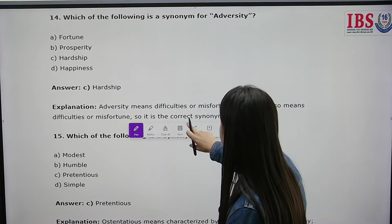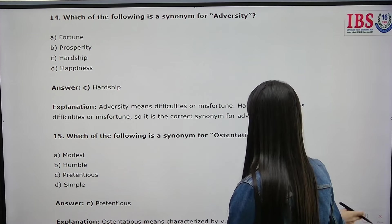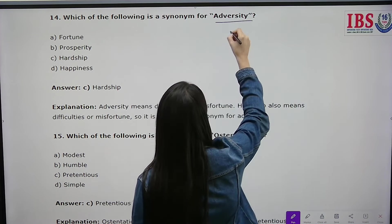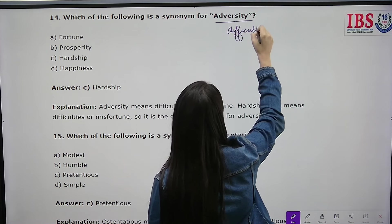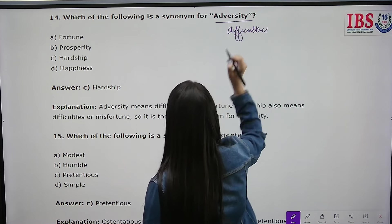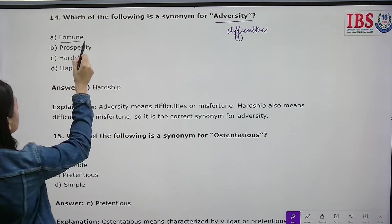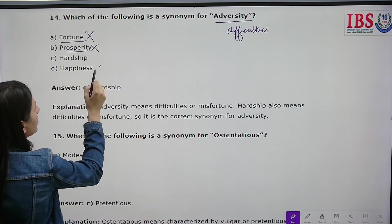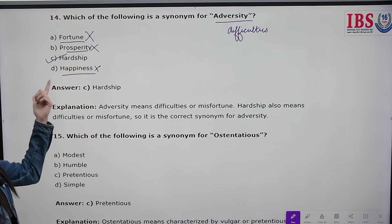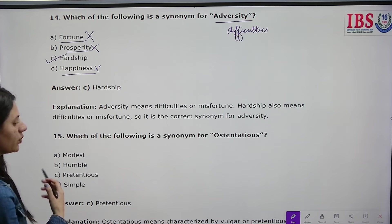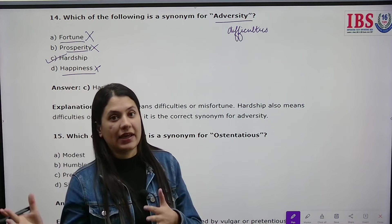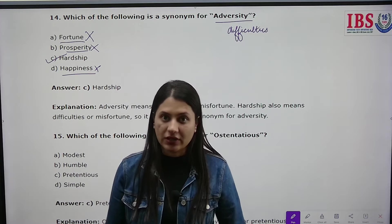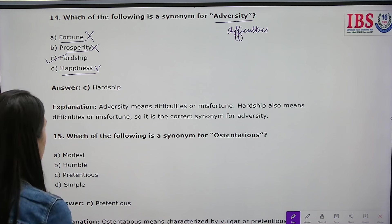Which of the following is a synonym for 'adversity'? Adversity means difficulty or hardship. The options are fortune, prosperity, happiness, and hardship. Fortune means destiny, prosperity means abundance, and happiness means joy. Hardship is the synonym — for example, 'he left her there in adversity, in difficult situations.'